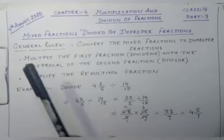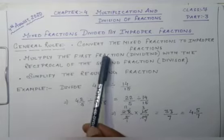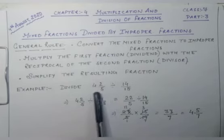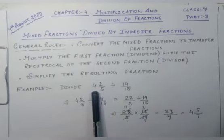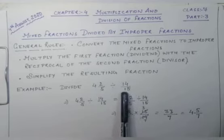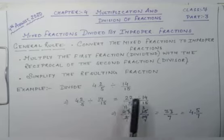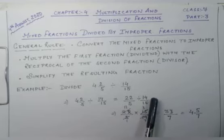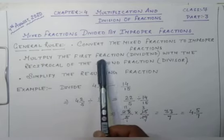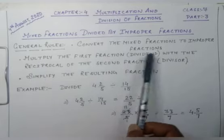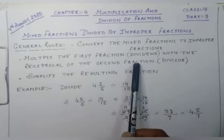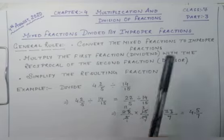Is that clear? The second rule says: multiply the first fraction, that is the dividend, with the reciprocal of the second fraction, that is the divisor. So when we are going to multiply the dividend with the divisor, the divisor will be reciprocated — meaning multiply the first fraction with the reciprocal of the divisor.